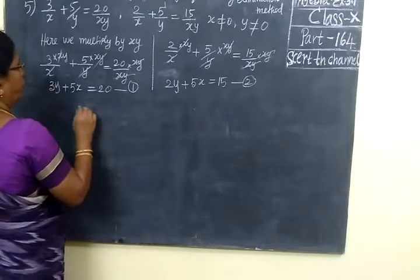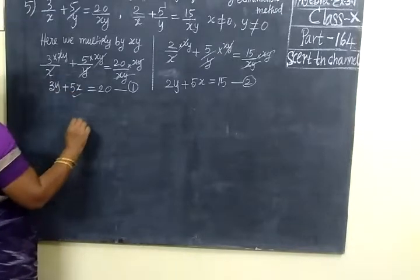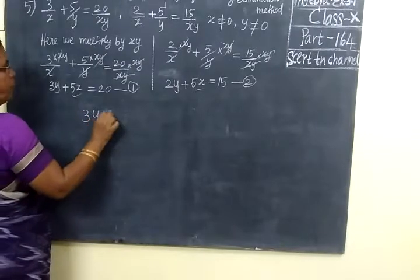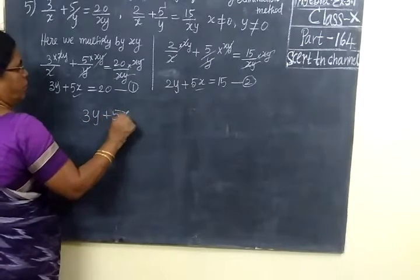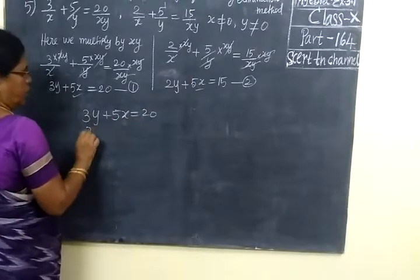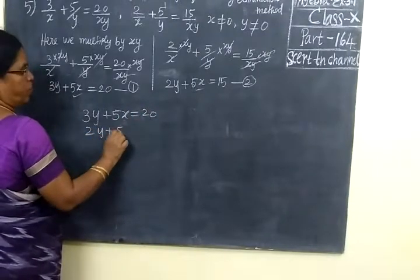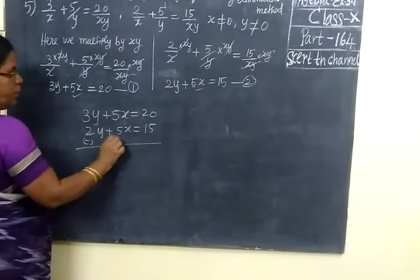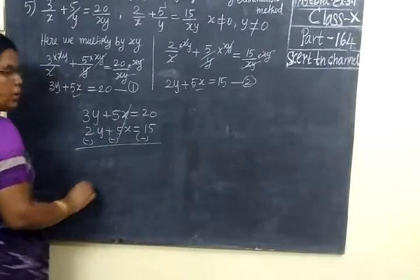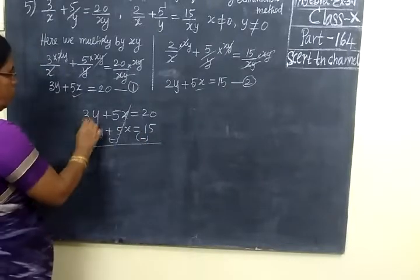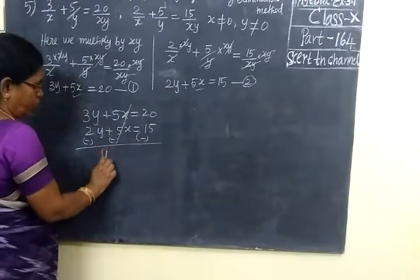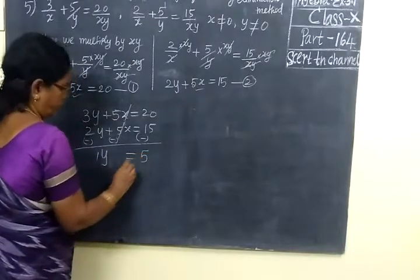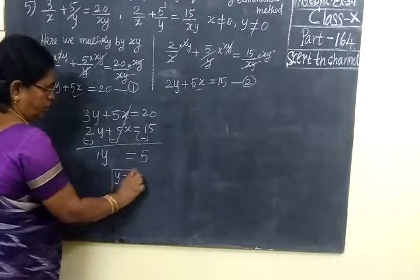Now consider 1 and 2, here in the 5x versus. That you write it 1 by 1, 3y plus 5x equal to 20, then 2y plus 5x equal to 15. Now you change the sign, minus minus minus, then 5x cancel on. So 3 minus 2y, 1 by 1 only to write, this is equal to 20 minus 15, 5. So answer, y equal to 5.